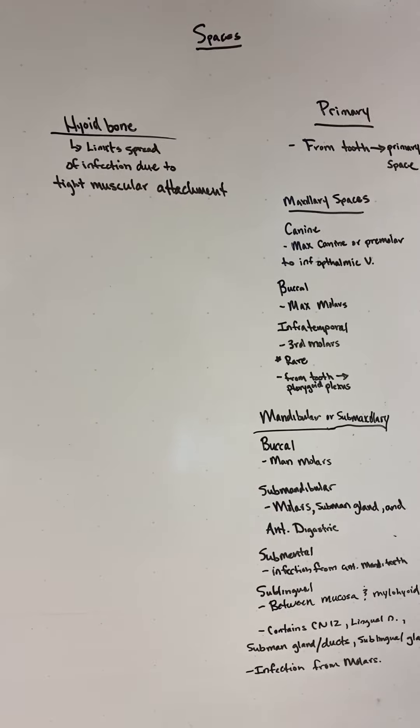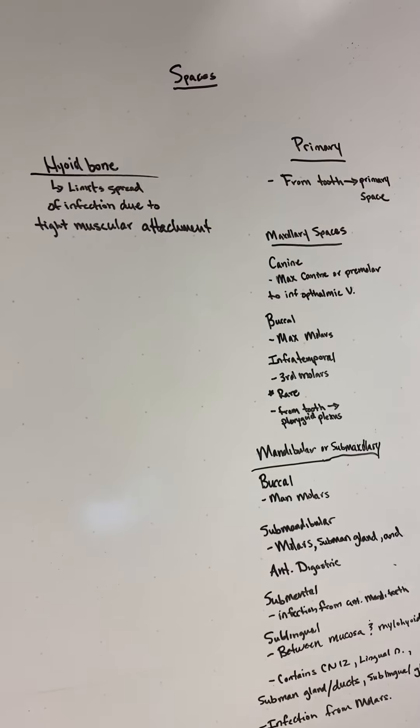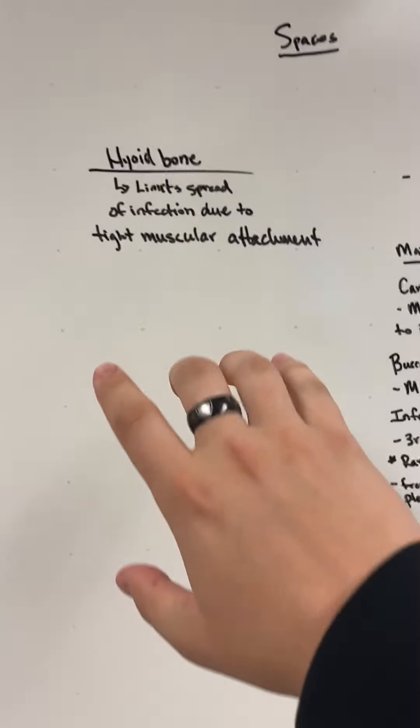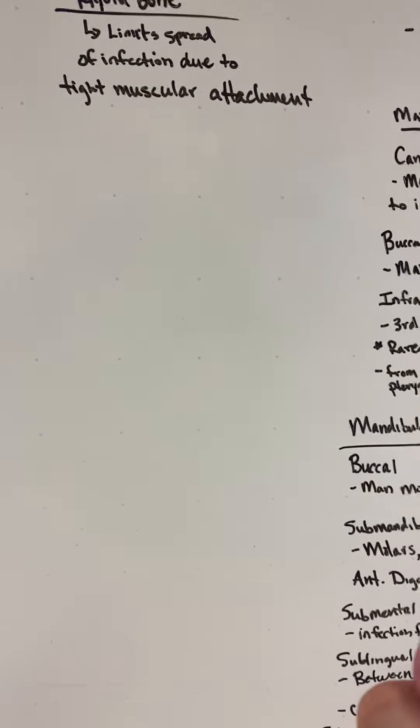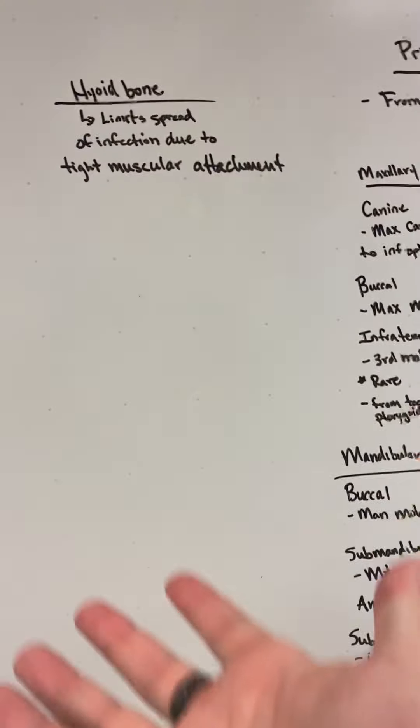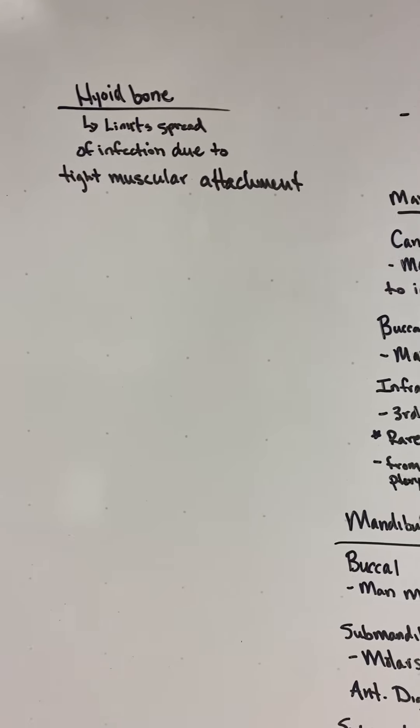All right, so this is going to be part two of the facial planes. It just goes into the spaces. Something to know about the hyoid bone is that there's a lot of muscular attachment to it, so it helps stop the spread of infection sinking down into the neck, which is important to know.